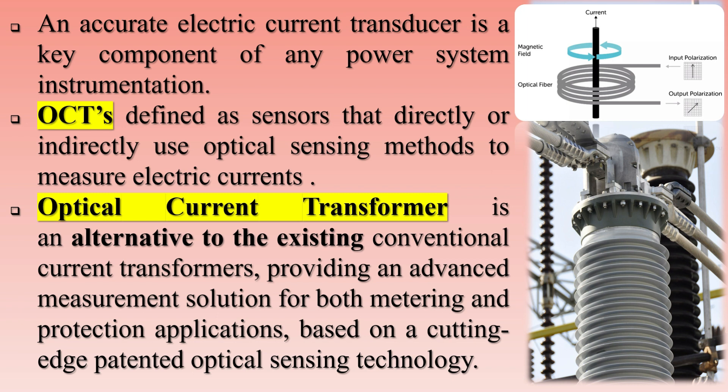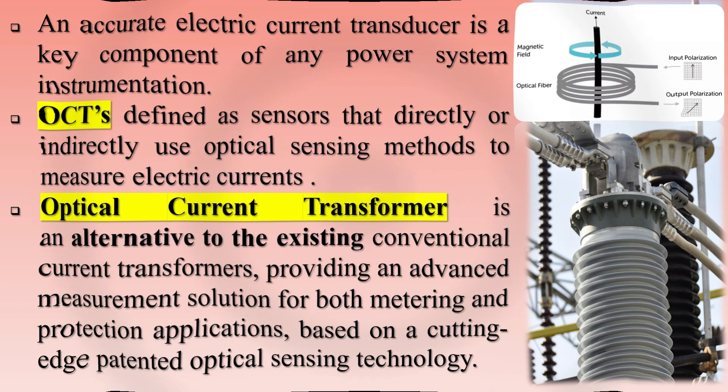The OCT uses a light-emitting diode (LED) and a photodetector to detect magnetic flux changes. The LED emits a beam of light that is focused on the photodetector. The photodetector converts the light into an electrical signal proportional to the change in magnetic flux.